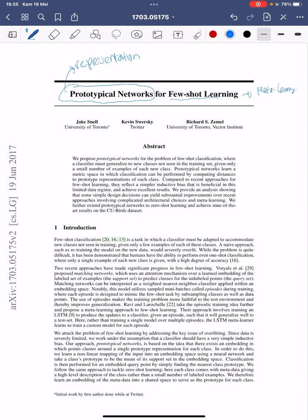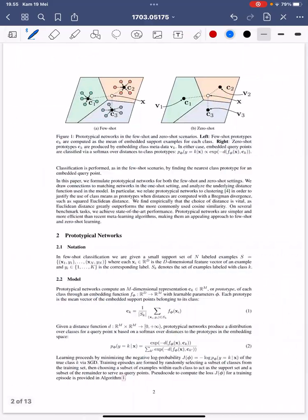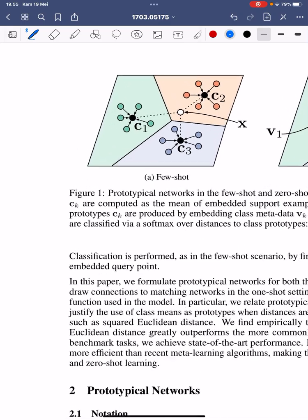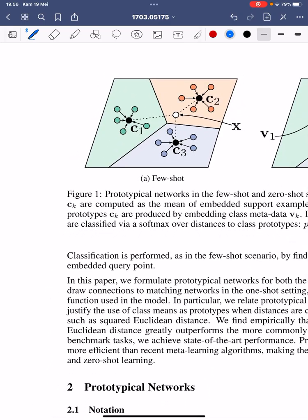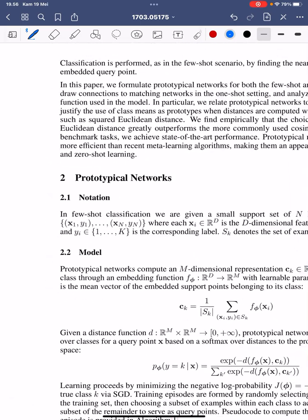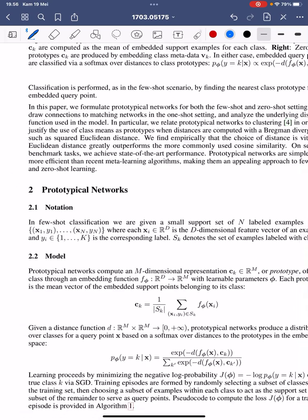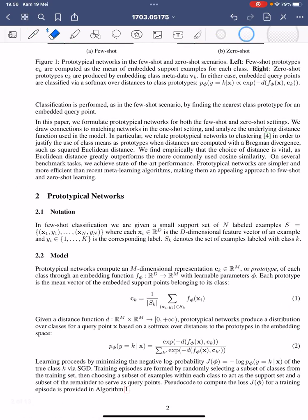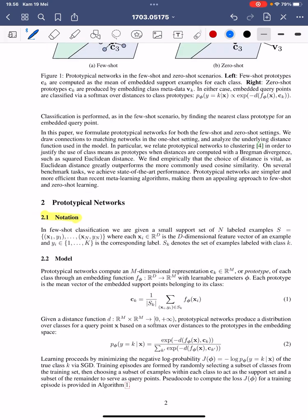Let's see what's going on in Figure 1. In few-shot learning, there is terminology called the support set and query set. Looking at the notation first: in few-shot classification we have a small support set with labeled examples. This support set contains one to N samples — the number N could be one, two, three, and in the literature it could be five or ten.